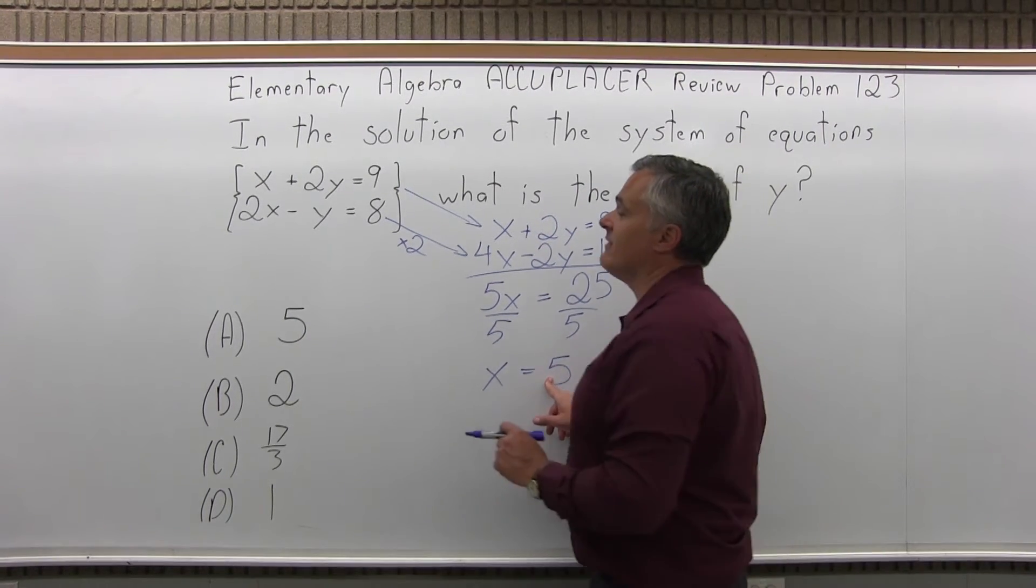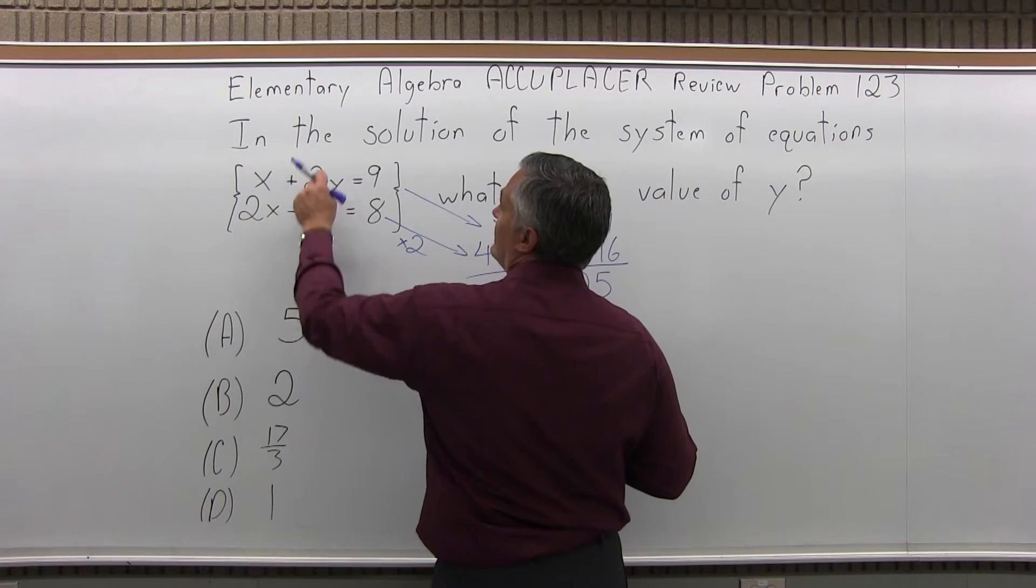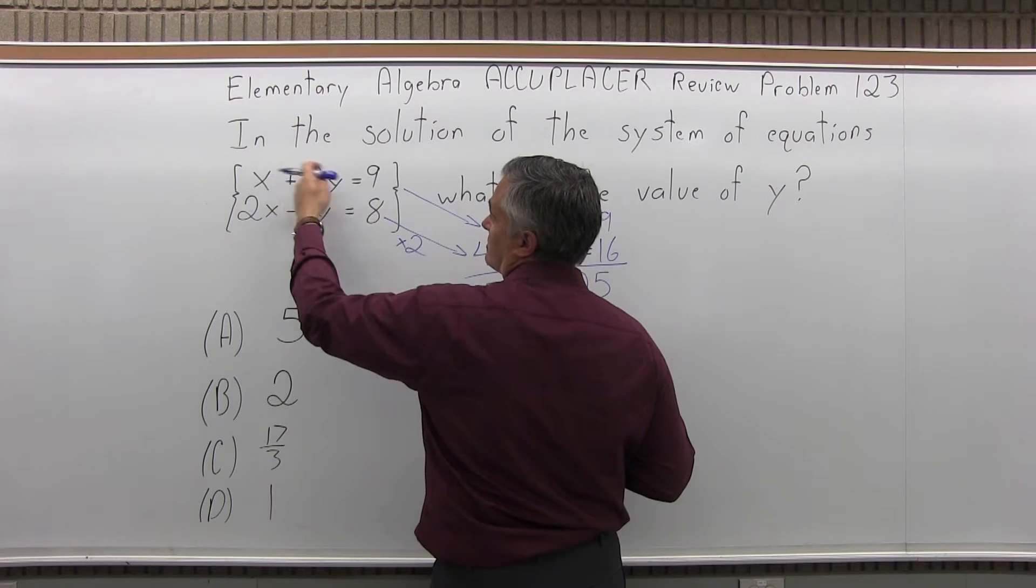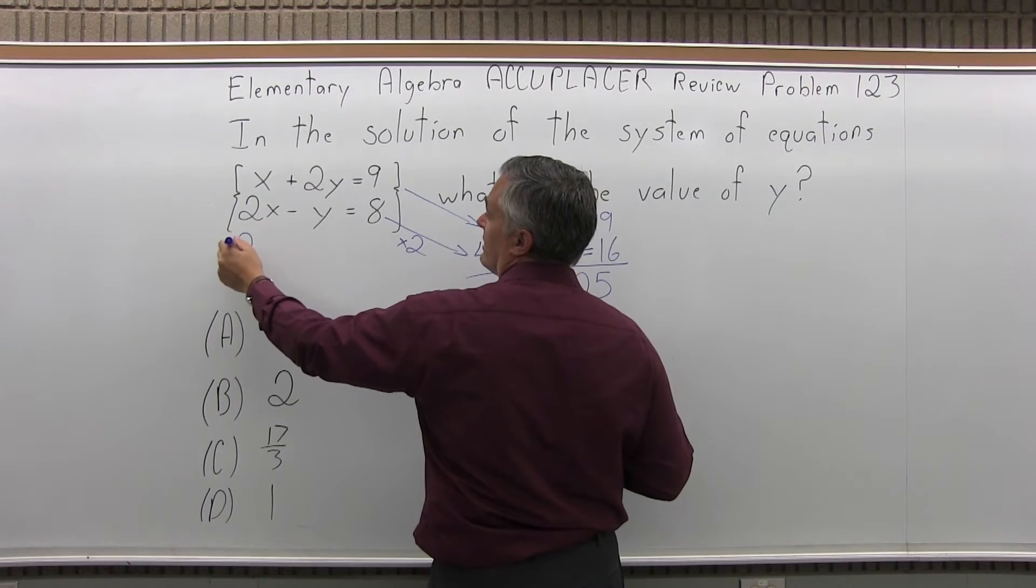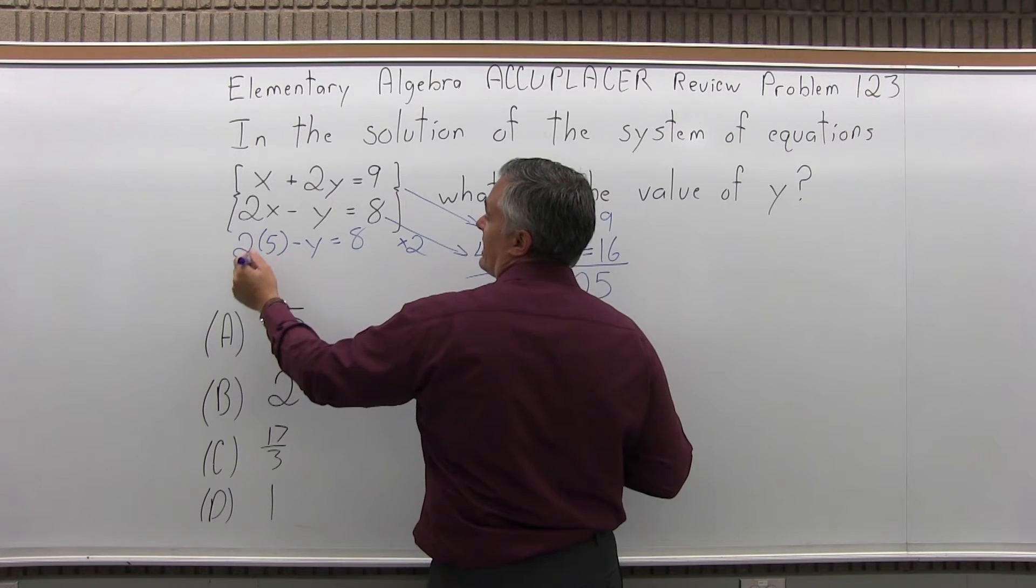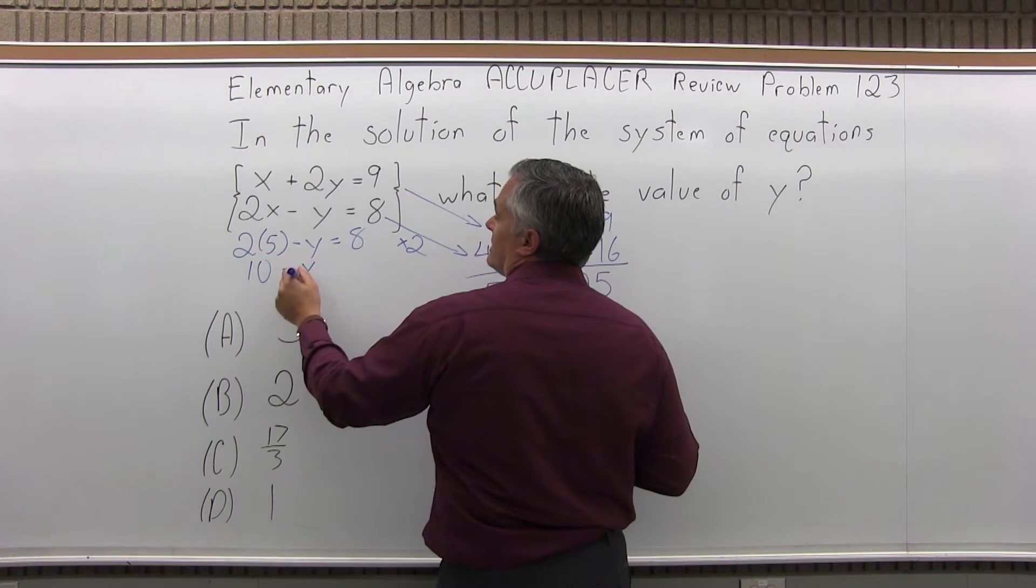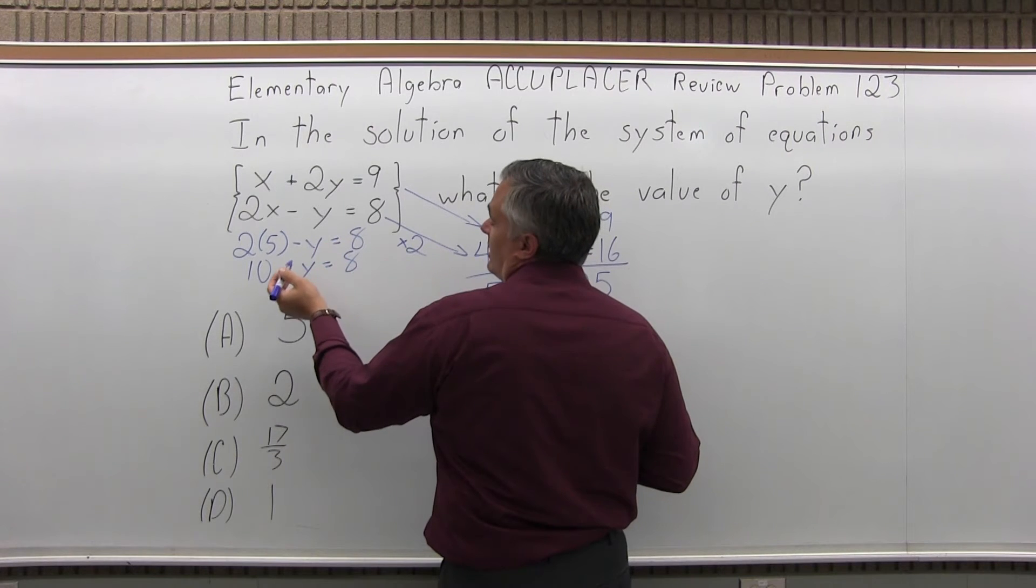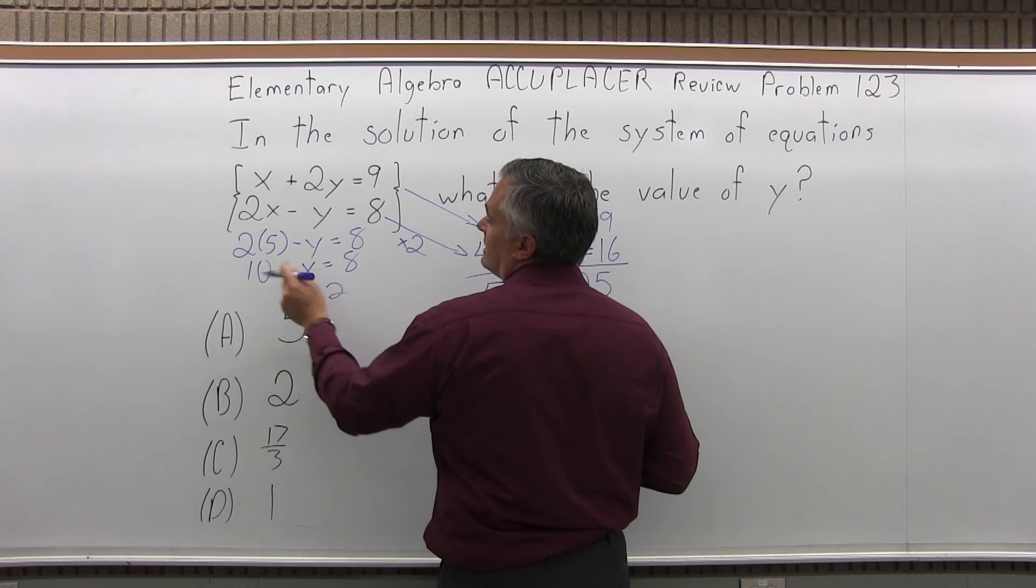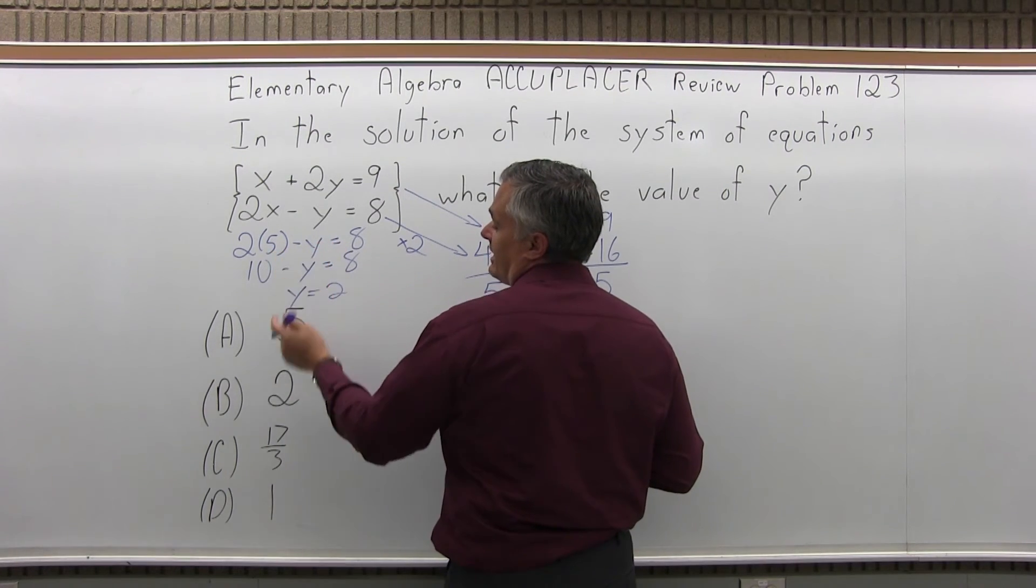So take the x as 5. We can put it back into either of the original equations and find y. Let's just do the bottom one. No special reason. You should get the same answer either way. 2 times x will be 2 times 5 minus y equals 8. 2 times 5 is 10. 10 minus y equals 8. Well, 10 minus how much is 8? Y must be 2. 10 minus 2 would make 8 equals 8.